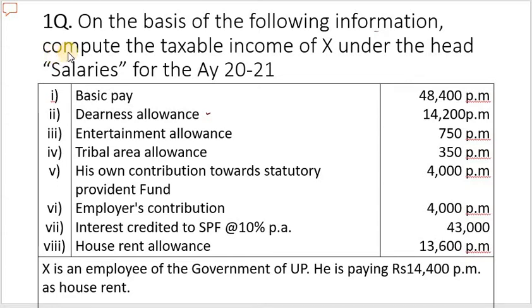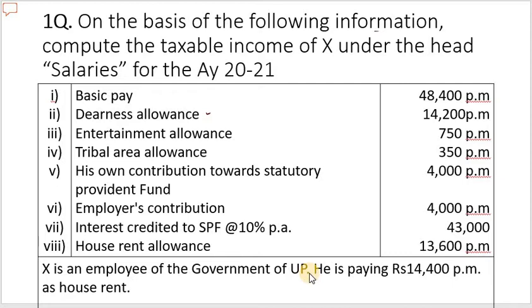Salary problem number one: on the basis of the following information, compute the taxable income of Mr. X under the head salaries for the assessment year 2020-21. The components include basic pay, dearness allowance, entertainment allowance, tribal allowance, provident fund employer's contribution, SPF, and house rent allowance. He is a government employee paying rupees 14,400 per month as house rent.